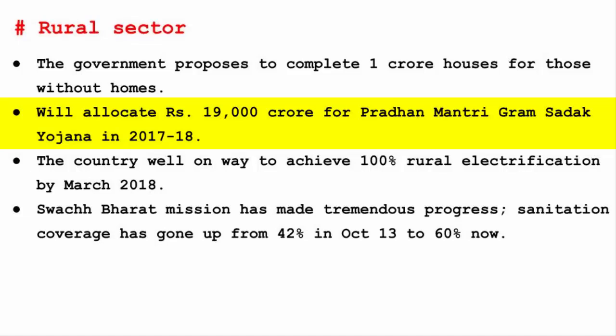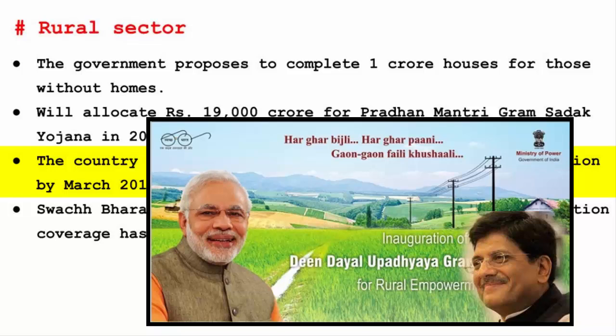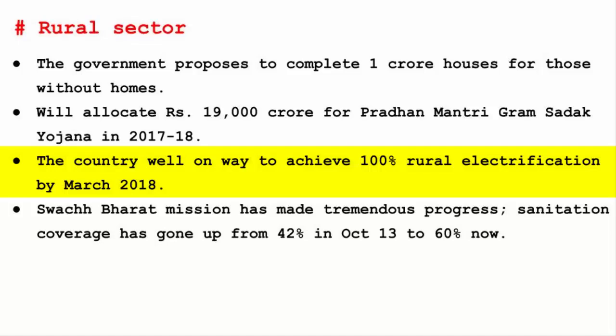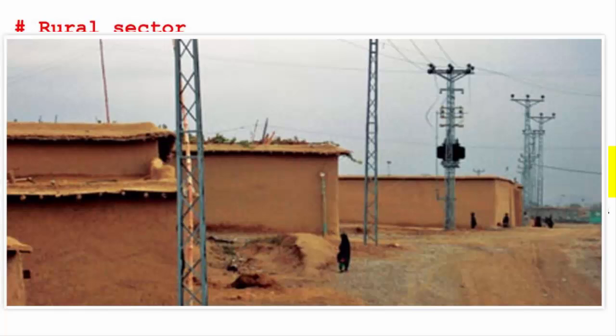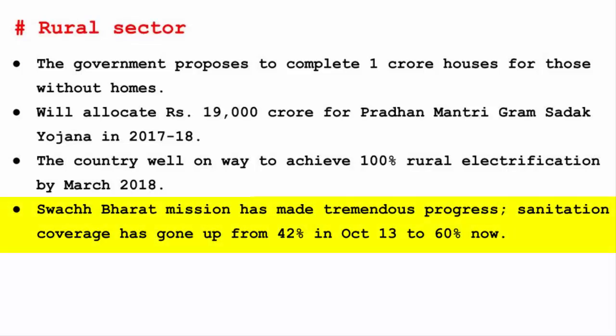The aim of Pradhan Mantri Gram Sadak Yojana is to connect the 65,000 villages and habitations still unconnected by roads. The country is also well on the way to achieving 100% rural electrification by March 2018. The ministry had initially decided to electrify 18,452 villages within 1,000 days, and now the government has decided to electrify 7,000 villages by this year's March end. Swachh Bharat Mission has made tremendous progress — sanitation coverage has gone up from 42% in October 2013 to 60% now, partly due to the Swachh Bharat cess of 0.5% imposed on all taxable services.